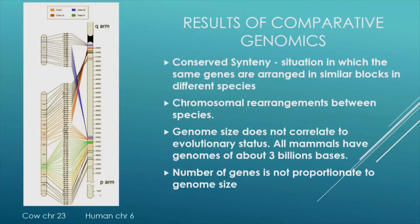These are some of the results of comparative genomics. We know that among mammals, for example, there are large sections of the genome that contain the same genes arranged in the same order in different species. The figure on the left of this slide is for a region on cow chromosome 23 compared to a region on human chromosome 6.